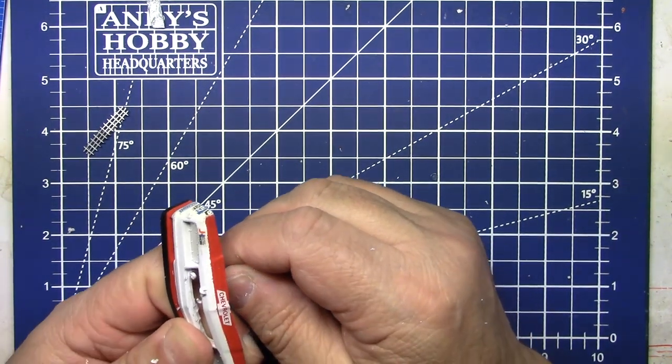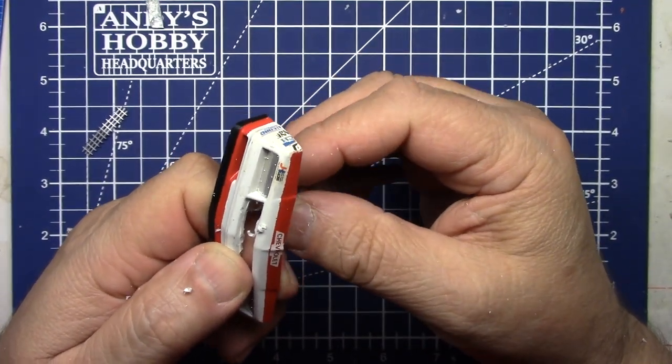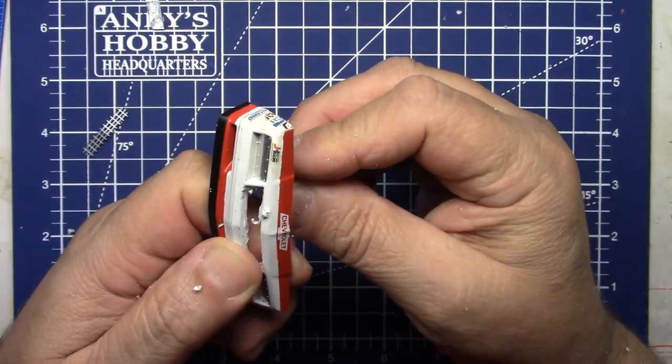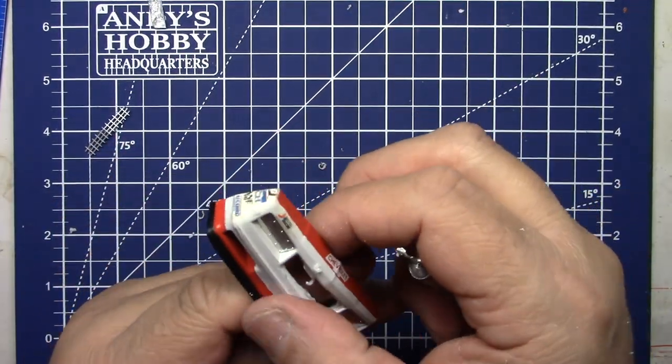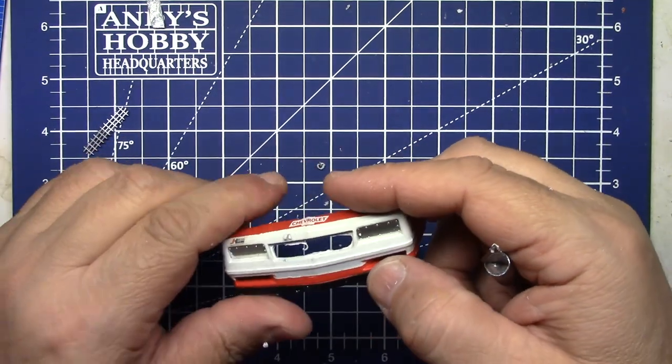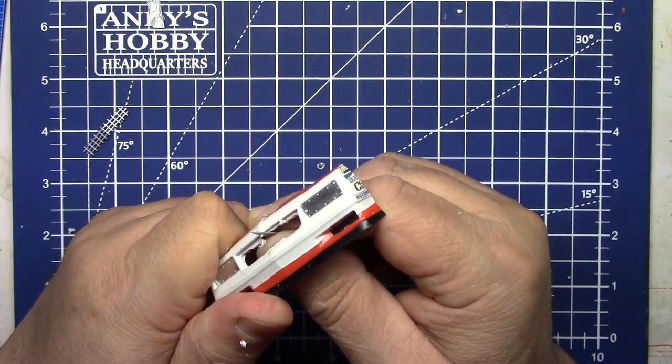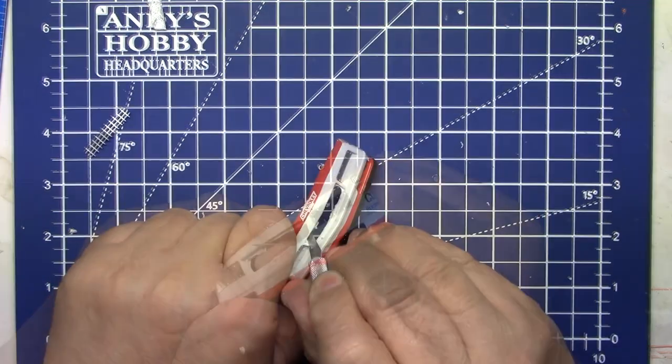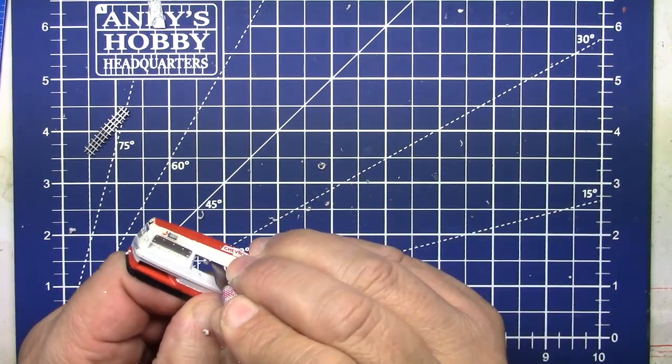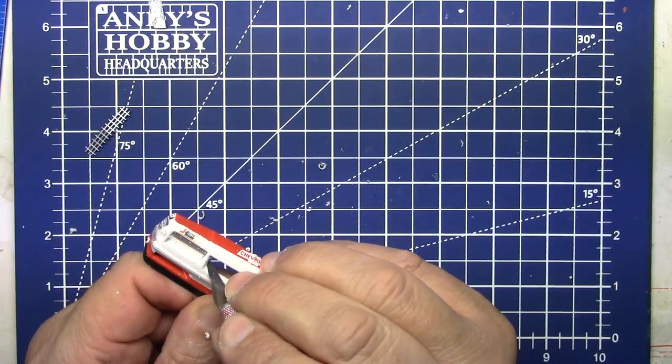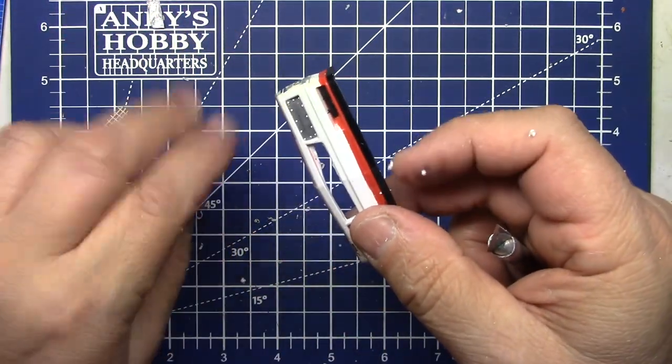And of course this is the old really hard Monogram plastic. If you're using a Salvinos kit this is going to be a lot easier because that old Monogram plastic was really really hard. This is a little bit more difficult doing it on this. Look at how I can break that away, do you hear that?